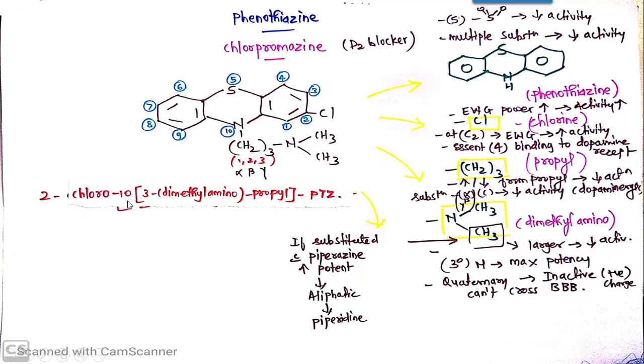The name becomes 2-chloro, at 10th position in bracket on third position of propyl there is a further substituent which is dimethyl amino. So it is 3-dimethylamino propyl bracket complete phenothiazine.